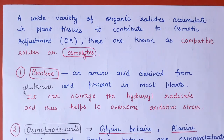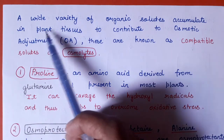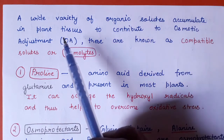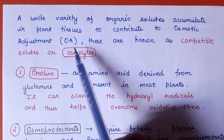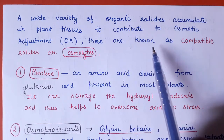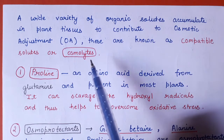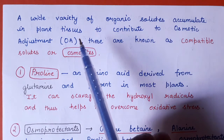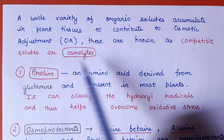Now let's talk about osmolites. A wide variety of organic solutes accumulate in the plant tissues to contribute to osmotic adjustment, and these are known as compatible solutes or osmolites. That means the organic solutes that accumulate in plant tissues for osmotic adjustment are called osmolites.